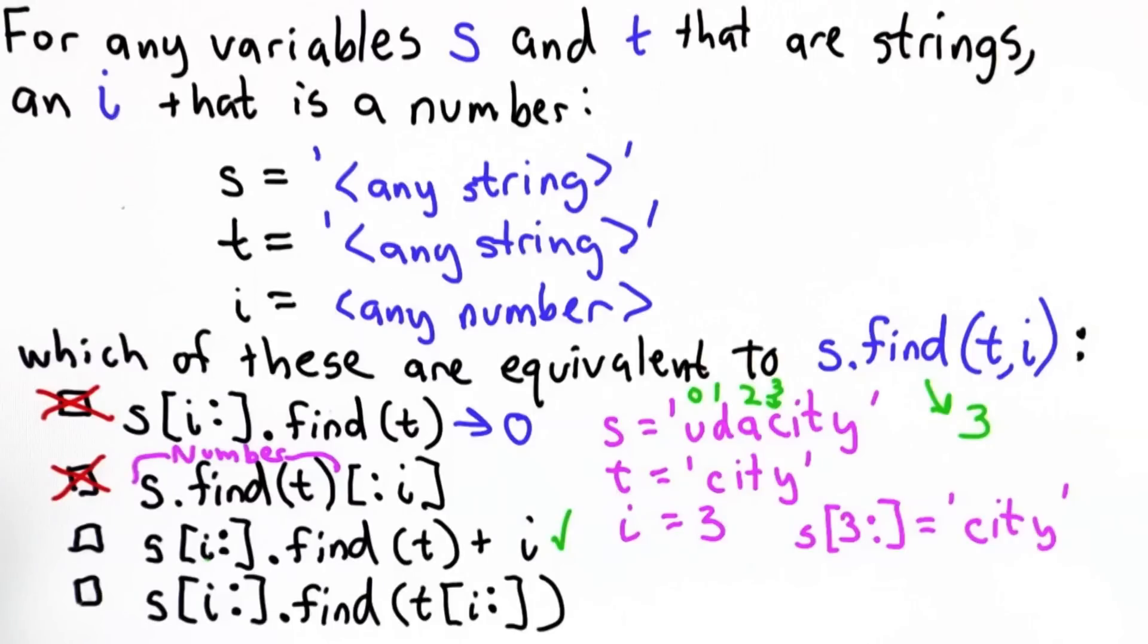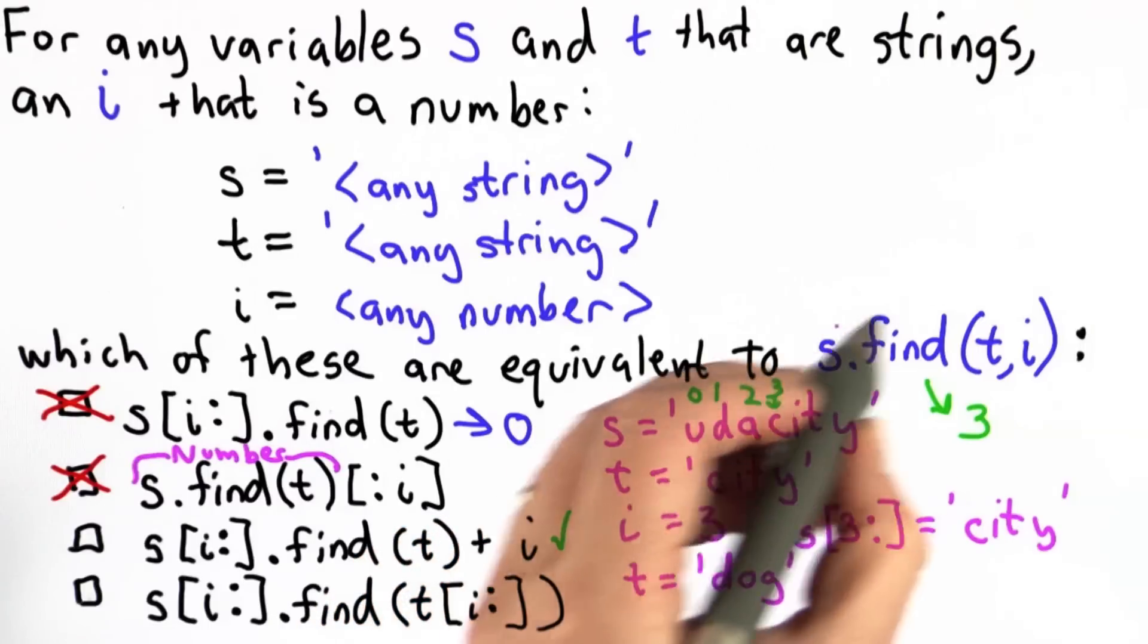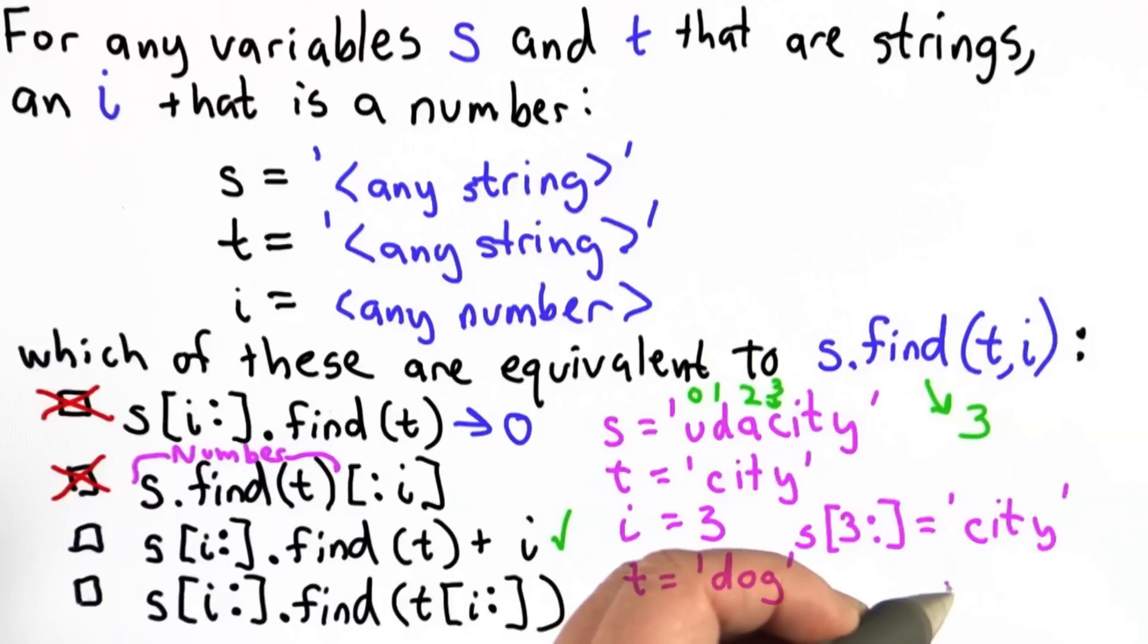If we made t something else, so let's suppose we made t dog, well then what's going to happen is the result of s.find(t, i), when t is dog, that result would be negative 1. Find always returns negative 1 when the string we're searching for is not found. In this case, we'd have negative 1 as the result for this. Add i to it. That would give us the number 2. That's not the same as negative 1. So this also is not equivalent. In cases where t is found, it is equivalent. But in cases where t is not found, it's not equivalent.